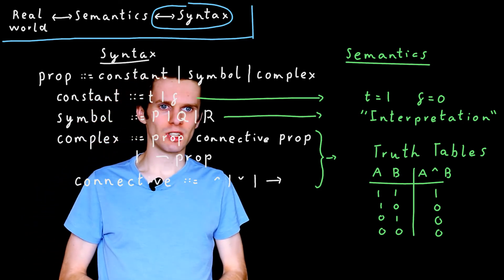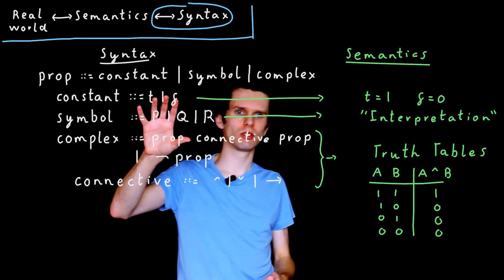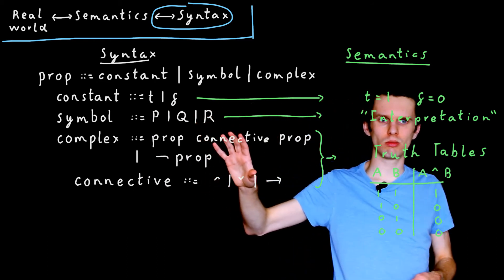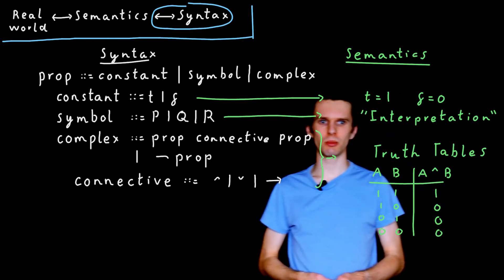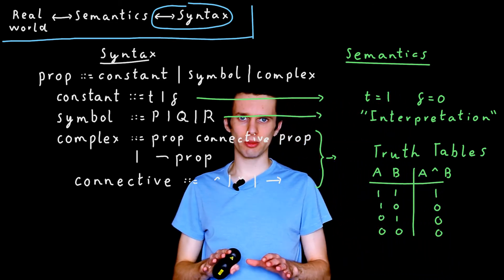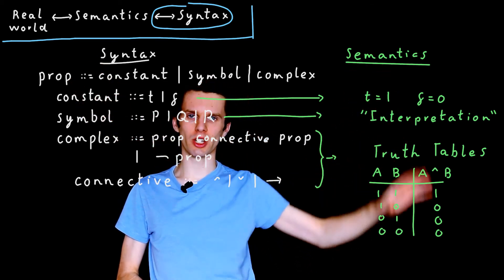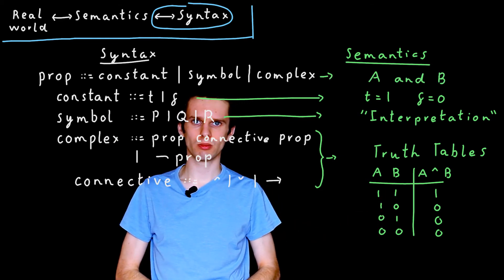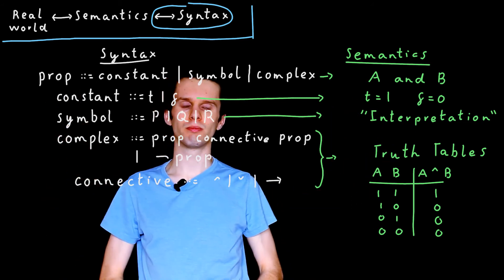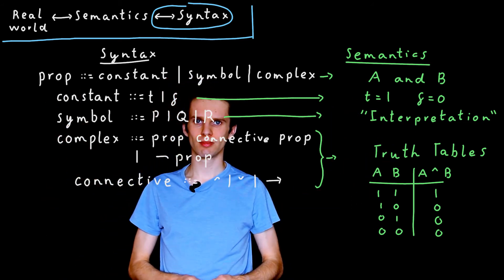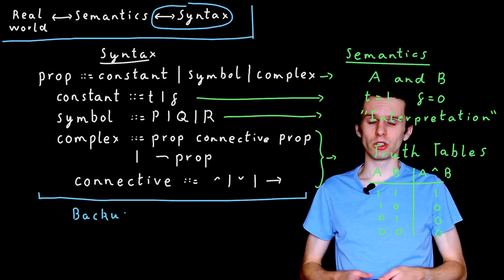One final thing to note is that I've just talked about A AND B. But if we look at our syntax, A AND B don't feature. We've got the letters P, Q, and R, sure, but no A's and B's. So where do they come into play? Well, A and B were some letters we used purely to represent propositions when we were talking about the semantics. And they don't feature at all within the syntax. They're simply things we used to represent propositions.